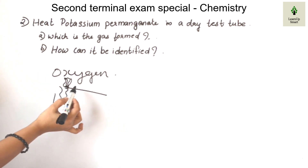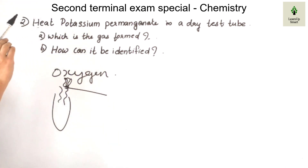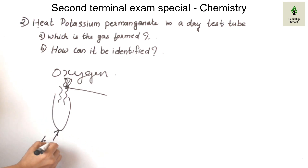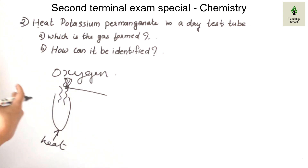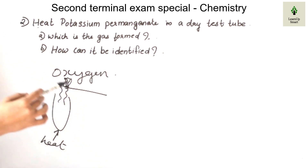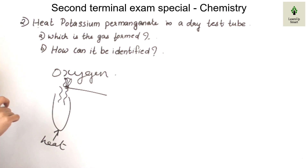We use an incense stick to identify the gas. We learned how to identify oxygen in this experiment. Heat is absorbed for the reaction — we are using heat. So this reaction is an endothermic reaction. Potassium permanganate dissociation is an endothermic reaction. Oxygen is identified because a glowing incense stick burns more brightly.